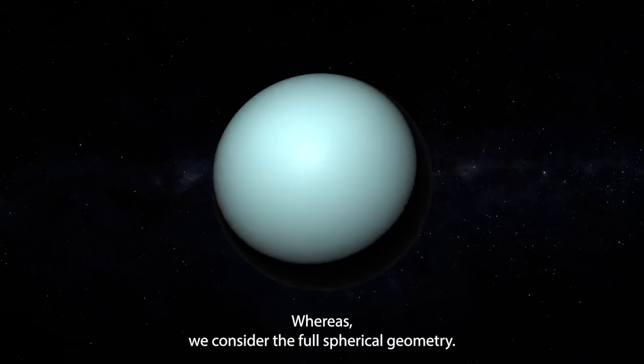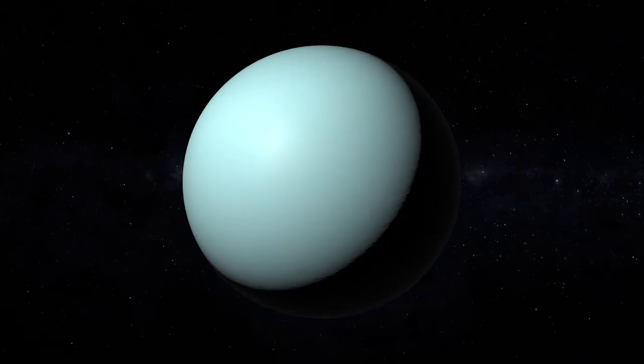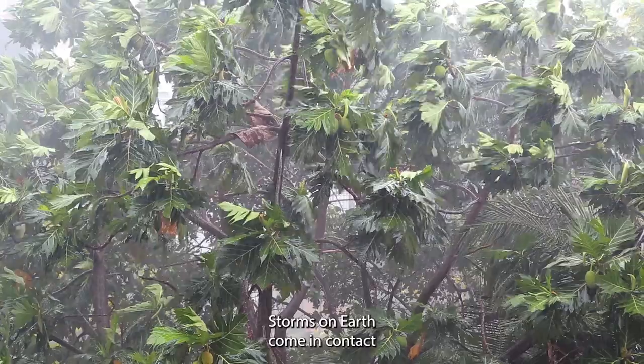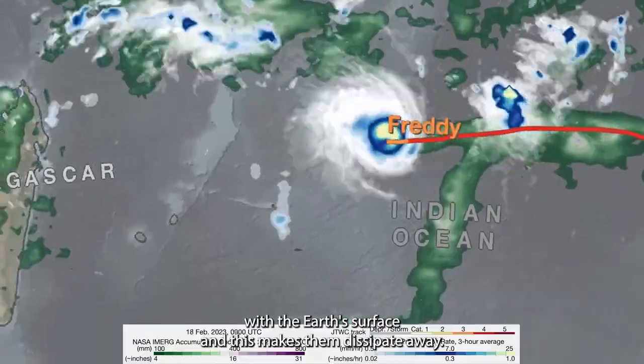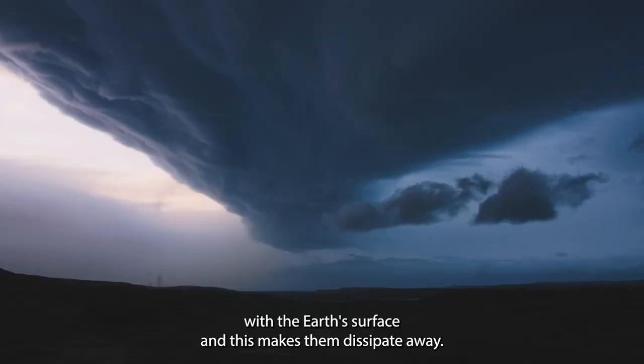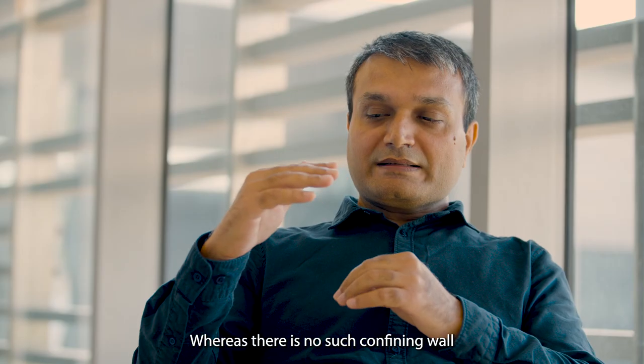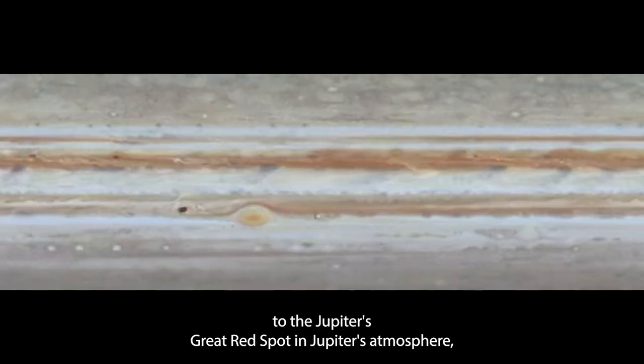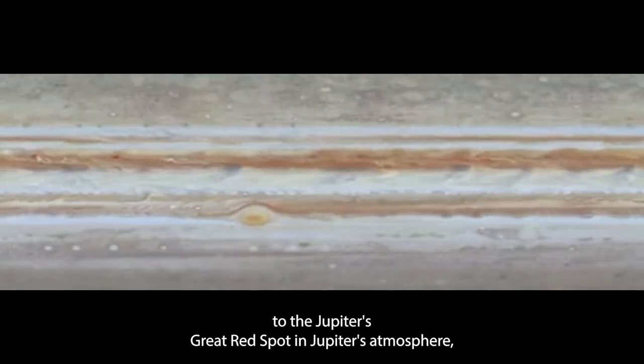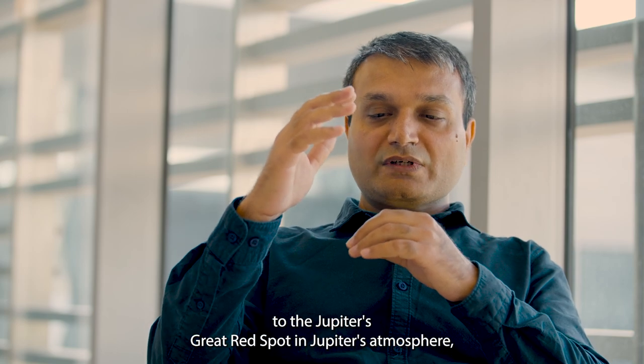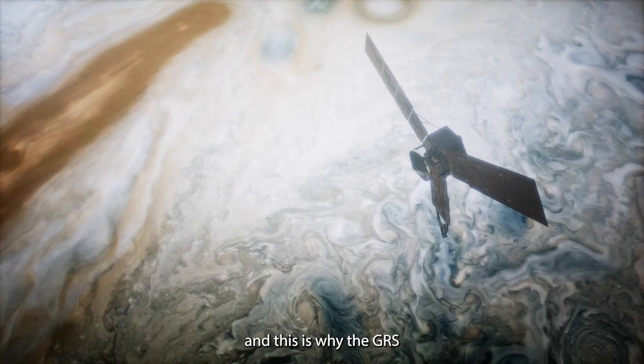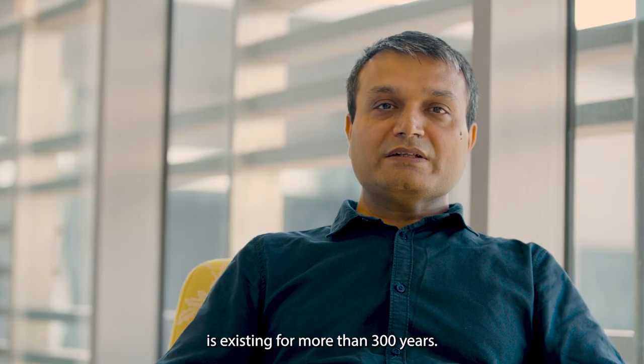The storm on Earth comes in contact with the Earth's surface, and this makes it dissipate away, whereas there is no such confining wall to Jupiter's Great Red Spot in Jupiter's atmosphere. And this is why the GRS is existing for more than 300 years.